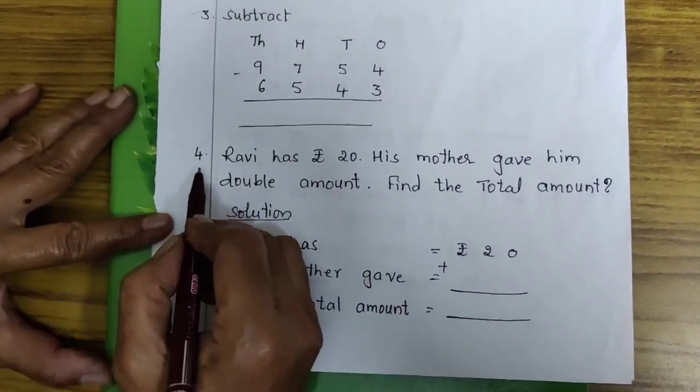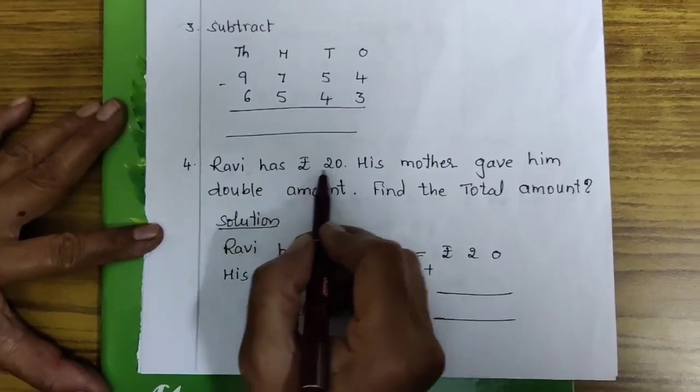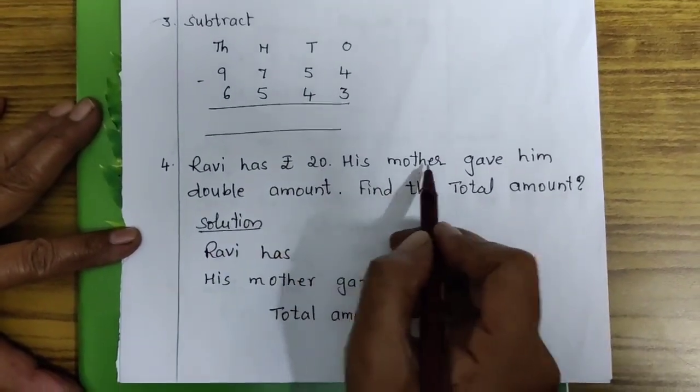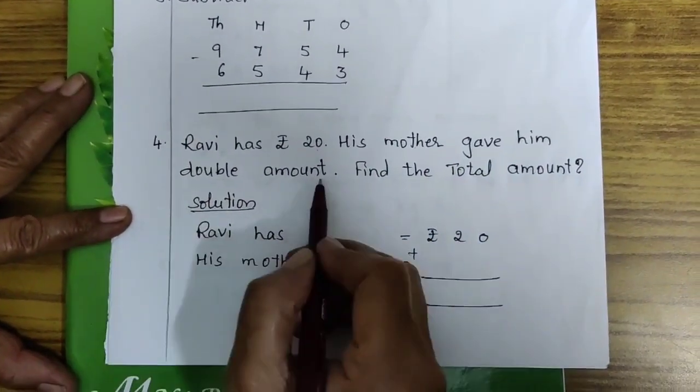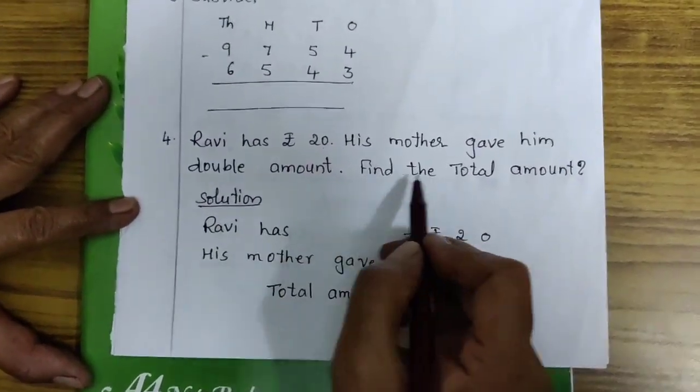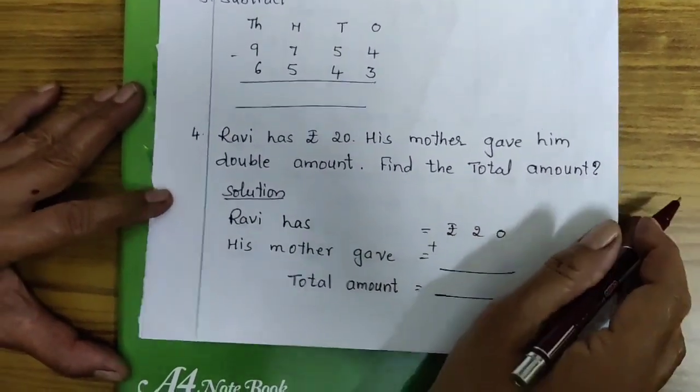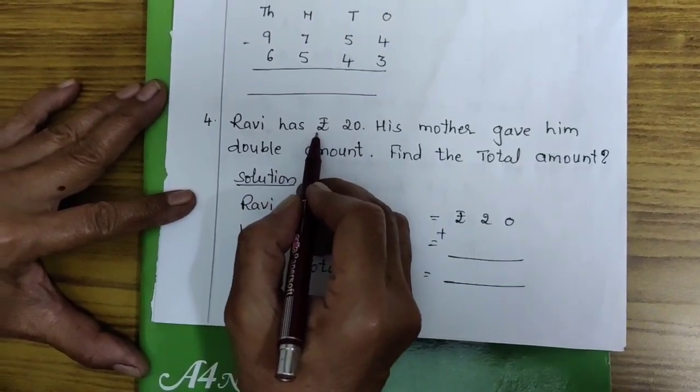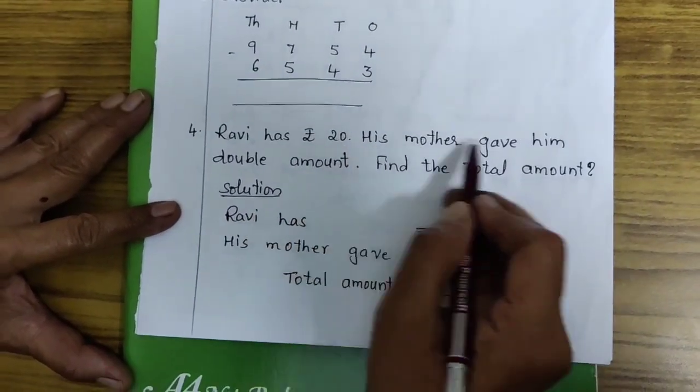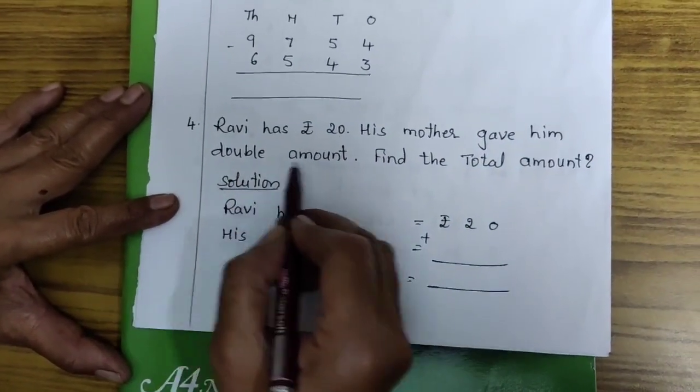Next, fourth question. Ravi has Rs. 20. His mother gave him double amount. Find the total amount. Children, Ravi has how much here? Rs. 20. And his mother gave him how much double amount?